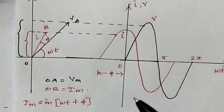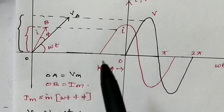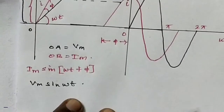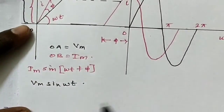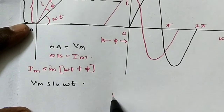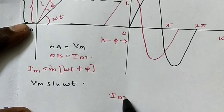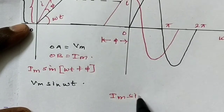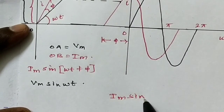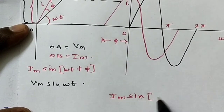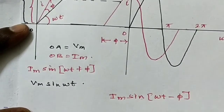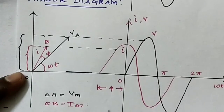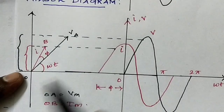Suppose the current lags behind: we write the equation as I = Im sin(omega t minus phi), which means it is lag behind. And if the current leads, we use the positive phase angle.